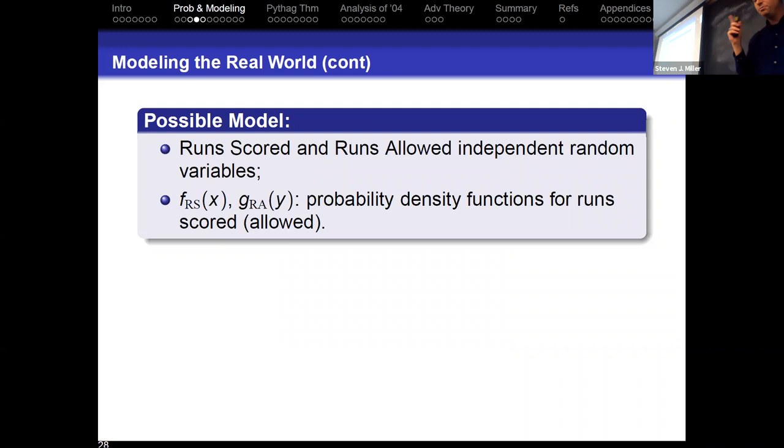So here's a possible model. Runs scored and runs allowed are independent random variables and there's some probability density functions for runs scored and runs allowed. So this is what I am proposing to you. Now just look at the clock and see how much time I have for you to find flaws in this model. So can you give me a reason why runs scored and runs allowed might not be independent?